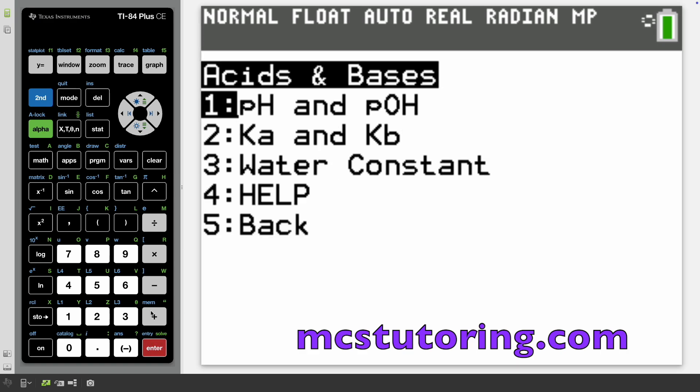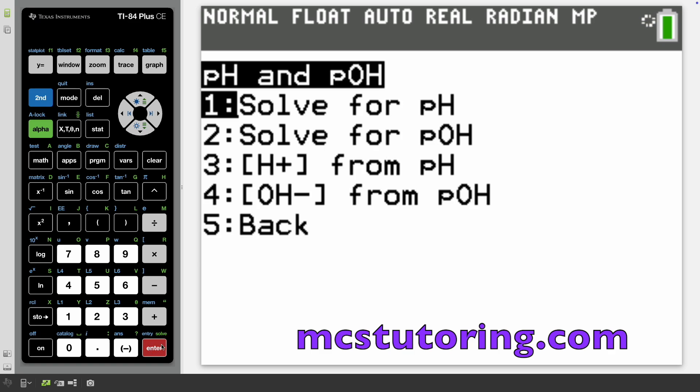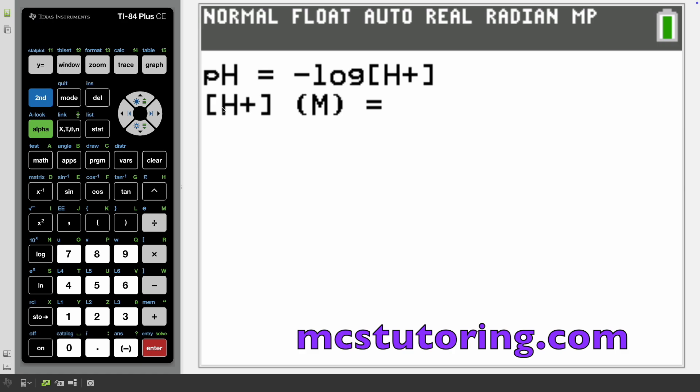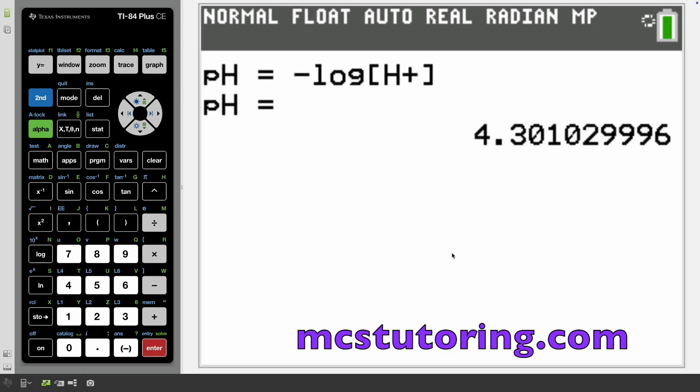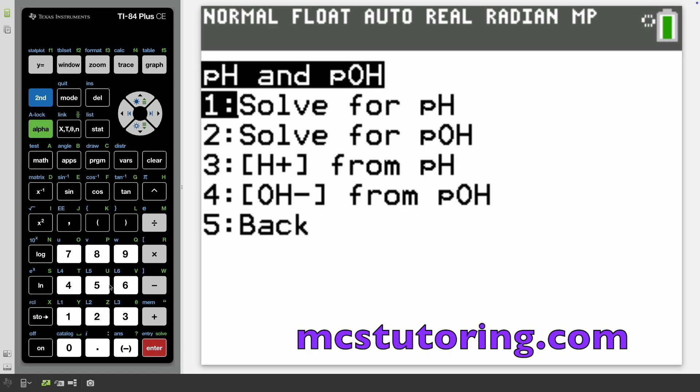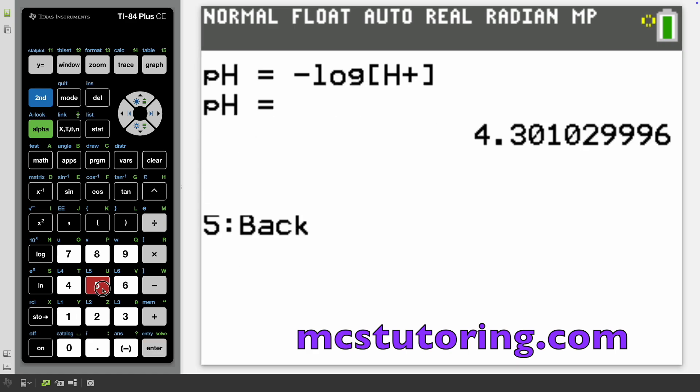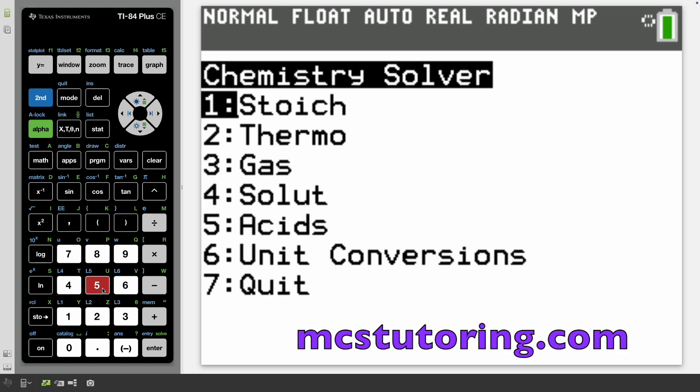Let's do pH and POH. Let's solve for pH. It's going to ask you H positive in moles. Let's say it's 0.0001. So pH is four. That's acidic because it's less than seven.